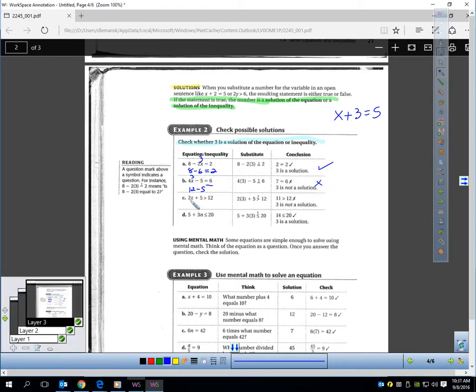Let's check and see if 3 is a solution to 2z plus 5 is greater than 12. Let's plug in a 3. Remember, I've got to do the multiplying first before the adding. 2 times 3 is 6. 6 plus 5. Is 6 plus 5 greater than 12? 6 plus 5 is 11. 11 is not bigger than 12. So, no, 3 is not a solution there.